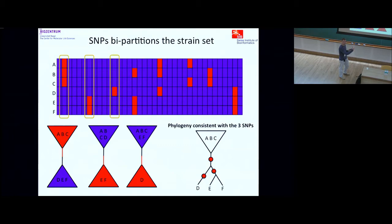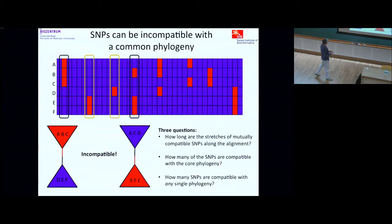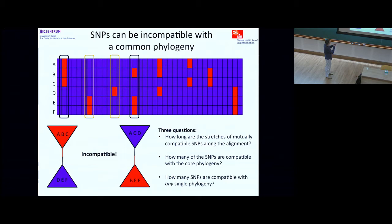We can ask: how long are stretches along this alignment where columns are consistent with one phylogeny? How many SNPs in the total alignment are consistent with the core phylogeny, and how many SNPs are compatible with any one single phylogeny? The first thing we found is that stretches of compatible SNPs are very short — it's typically just a few, and almost never more than 20.